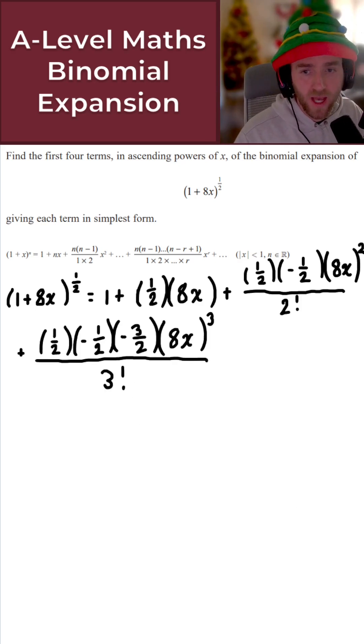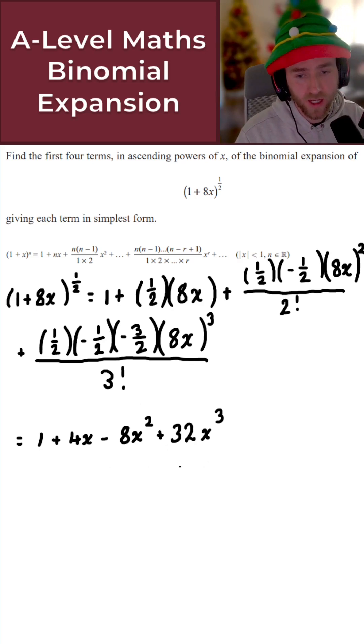So to finish here, as the question asks for, let's just give each term in its simplest form. And then, bosh, we have our answer. So let's just do that on the line underneath. And if you simplify everything correctly, what we get is 1 plus 4X minus 8X squared plus 32X cubed. And there we go. That gives us the first four terms in ascending powers of X for the binomial expansion of this, giving us a solution to today's question. This has been a solution. Well, indeed.